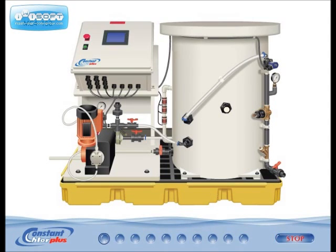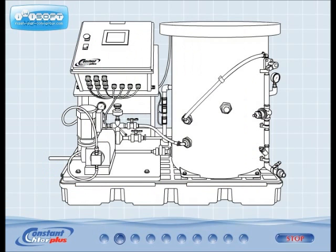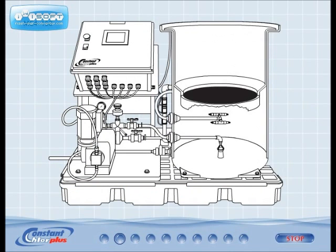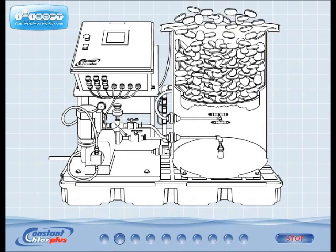Constant Chlor calcium hypochlorite systems are designed to deliver a consistent strength of chlorine solution for sanitizing water. The process begins when Constant Chlor plus calcium hypochlorite briquettes are added to the hopper.